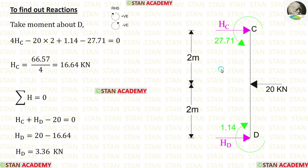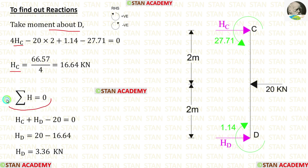Now let us take column CD and find the reactions. To find HC, we take moments about D. Then applying the rule ΣH = 0, we can find HD.